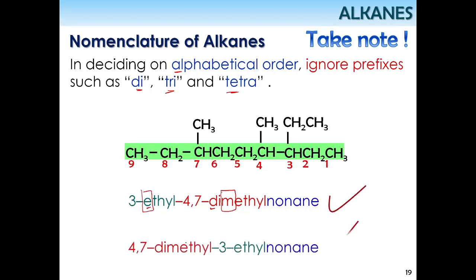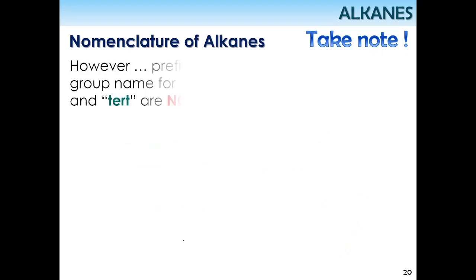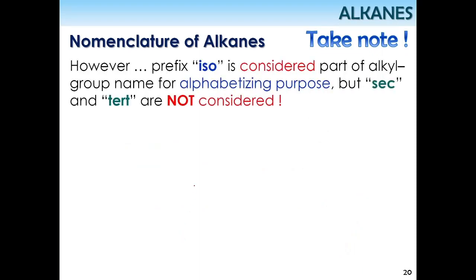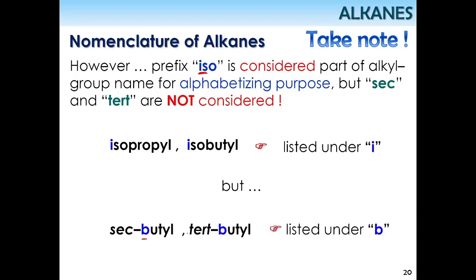Also note: ISO is considered in alphabetical ordering — the I in ISO is counted and listed under I. However, for sec-butyl and tert-butyl, the sec- and tert- prefixes are not considered; you look at the B in butyl. This can be a little confusing, but you need to remember this rule.